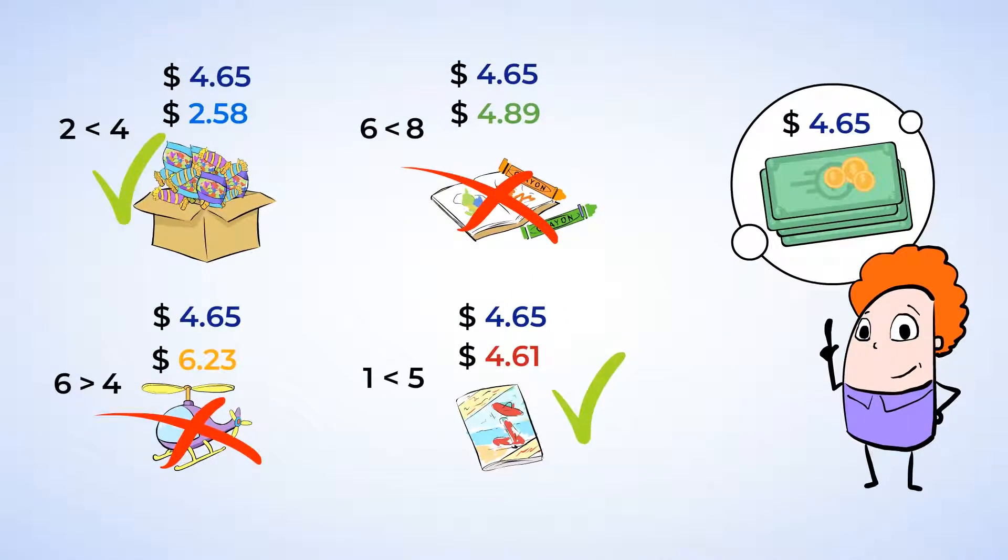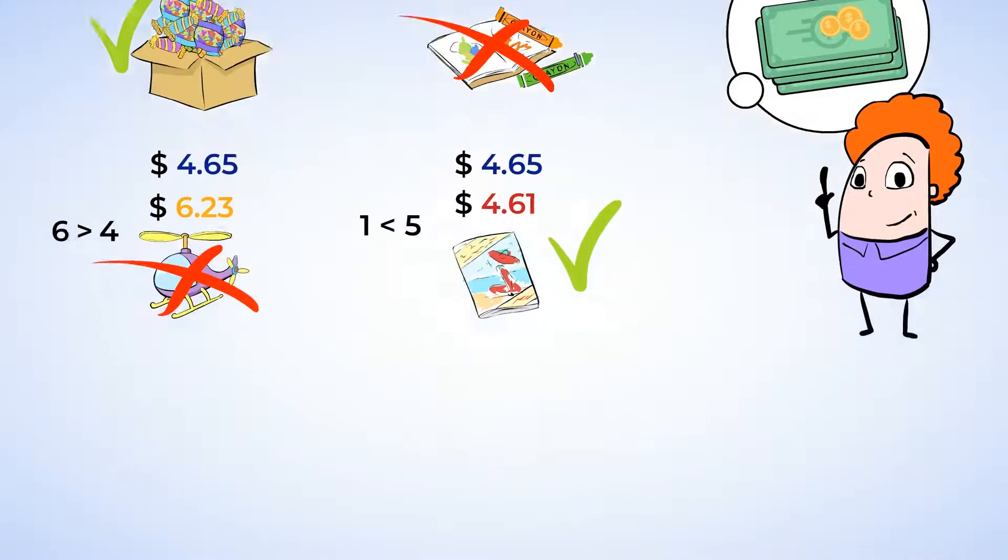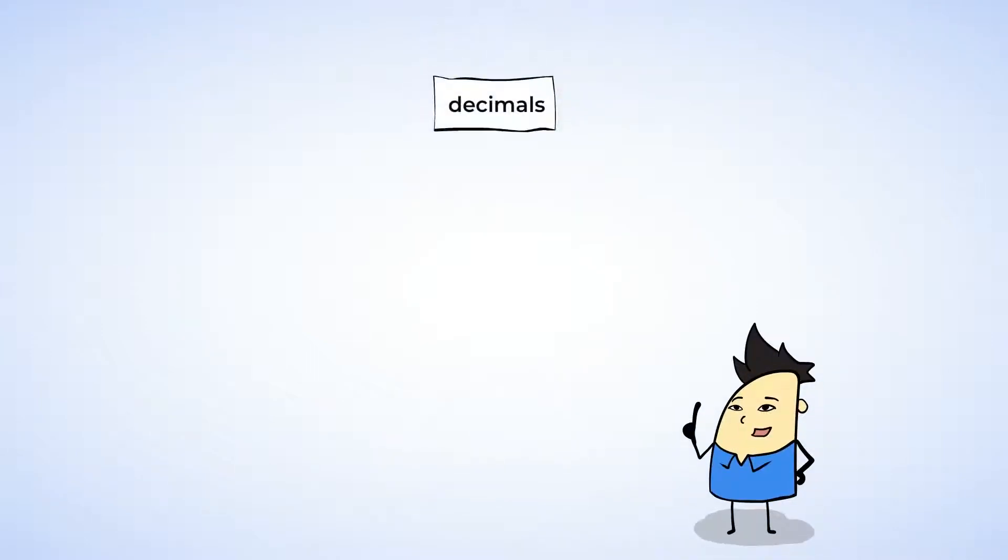Looks like you have the option of purchasing the box of candy or your favorite magazine. Oh, but you can only choose one? Hey, that's a tough choice. Good luck with that one. You just compared decimals. Now, let's take a closer look at what you just did.